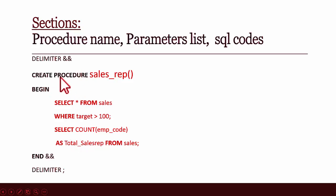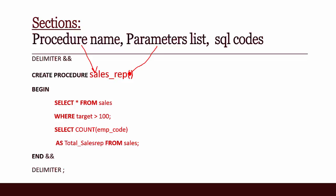After CREATE PROCEDURE we give the name of the procedure. The parameter list comes between the two brackets, and the SQL codes come between the BEGIN and END statements.